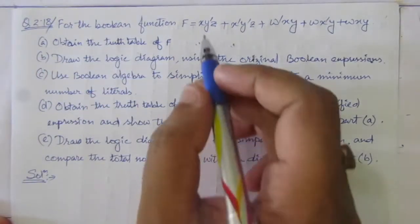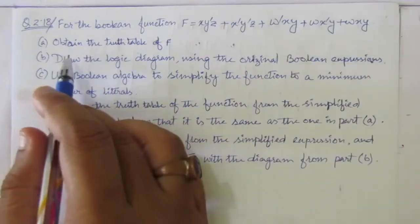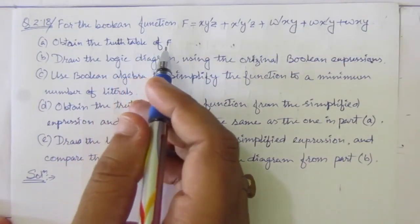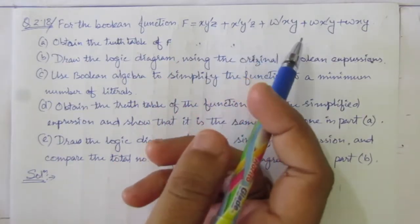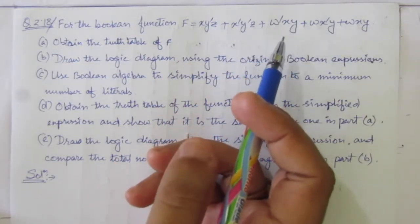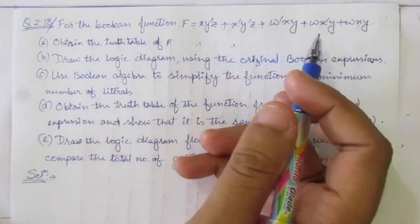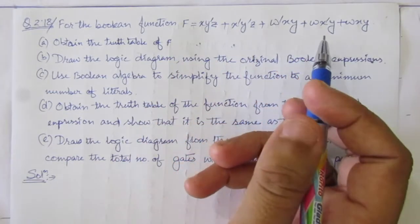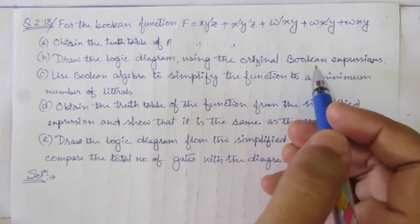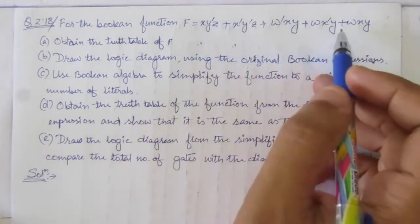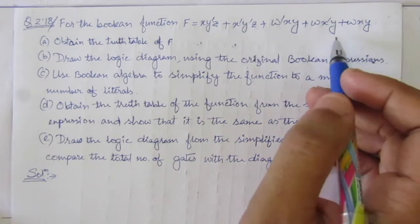In this problem, we are given a function. First of all, we have to find out the truth table of the function f. We have to take w, x, y, and z as input and find out the value of f using this Boolean function. Then we have to draw the logic diagram using the original Boolean expression.